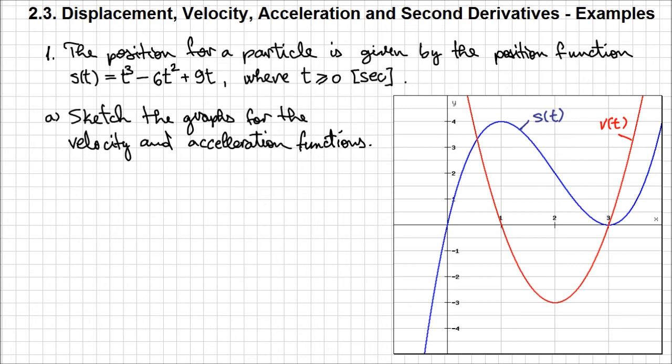We repeat this process again, this time considering the velocity and the rate of change of its graph to sketch the acceleration function. From this quadratic function, we expect a linear function. The velocity function has only one point where the slope of the tangent is zero, and that is when t equals 2. When t is 2, the rate of change of velocity — the acceleration — is zero. So the acceleration is zero at t = 2.